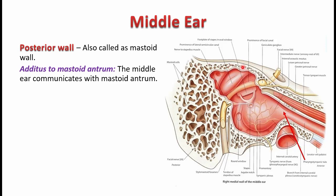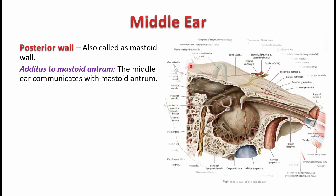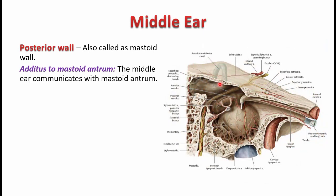The roof of the middle ear cavity continues as the roof of the mastoid antrum. That is part of the mastoid air cells, and it communicates through the opening in the upper part of the posterior wall, which is called the aditus to the mastoid antrum.